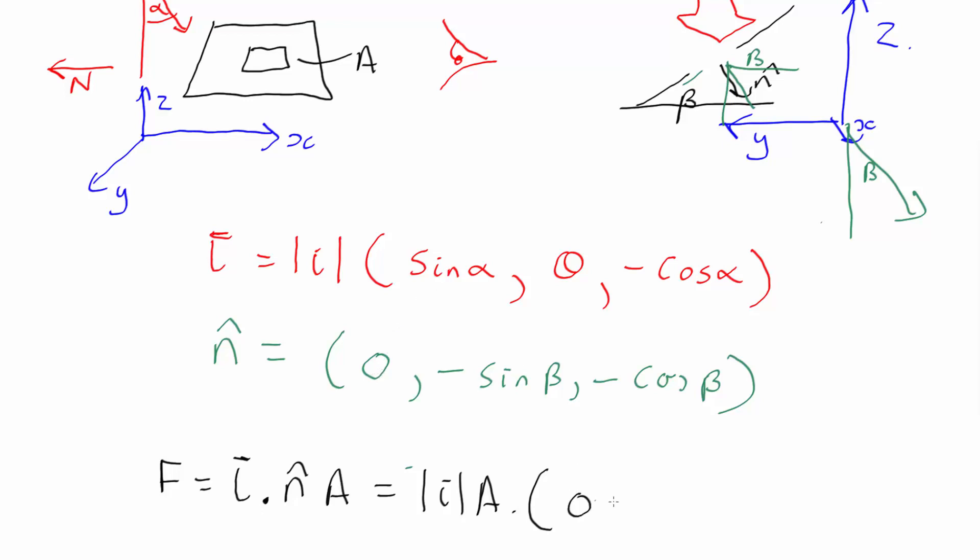So you have 0 times sine alpha, which is 0, plus, that should be 0, not theta, 0 times sine beta, which is 0, plus minus cos alpha times minus cos beta. Minus times minus is plus,